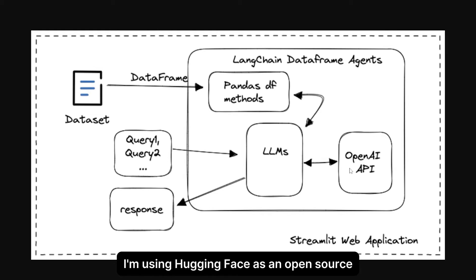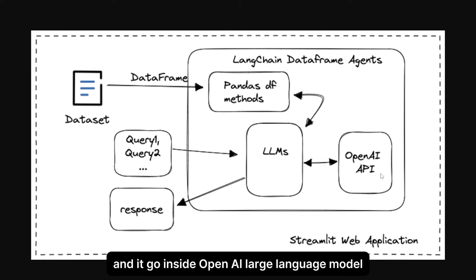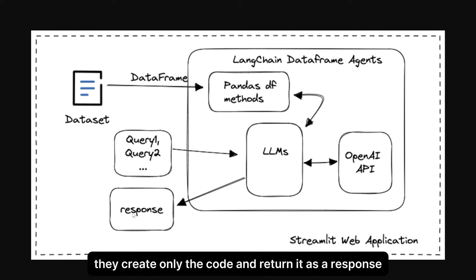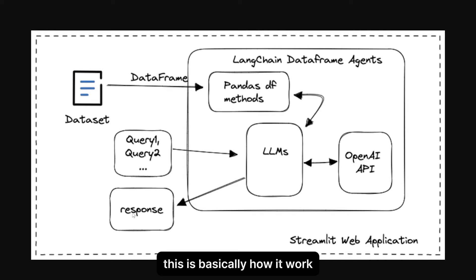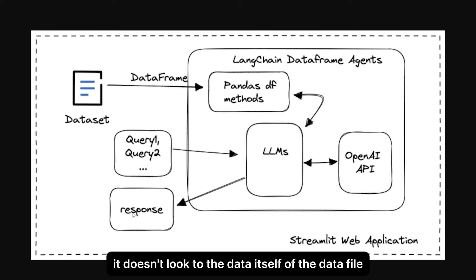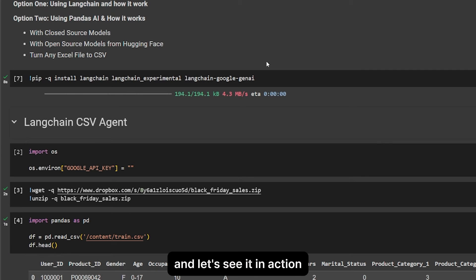For example, OpenAI — or in my case I'm using Hugging Face as an open source option, and also Gemini. You tell it what you want; basically you want to extract something like the number of females in a market dataset. It goes inside the large language model, which creates only the code and returns it as a response, executes it, and gives you a result. This is basically how it works — it doesn't look at the data itself, just at the columns and rows.